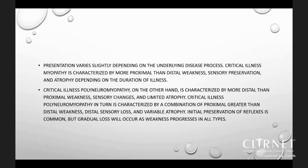Presentation varies slightly depending on the underlying disease process. Critical illness myopathy is characterized by more proximal than distal weakness, sensory preservation, and atrophy depending on the duration of illness. Critical illness polyneuropathy is characterized by more distal than proximal weakness, sensory changes, and limited atrophy. CIPNM is characterized by a combination of proximal greater than distal weakness, distal sensory loss, and variable atrophy. Initial preservation of reflexes is common but gradual loss will occur as weakness progresses in all types.